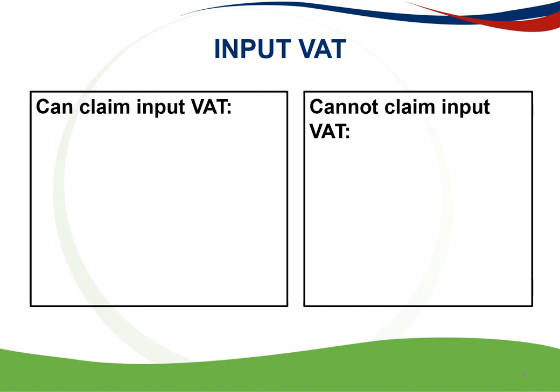The basics of input VAT. Input tax is the VAT component of the payment for goods and services supplied to the vendor for the purpose of making taxable supplies. For example, a vendor who purchases stationery to be used in the making of taxable supplies can claim the VAT portion of the expense as input tax. This input tax can then be deducted from the output tax in order to calculate the total VAT payable or refundable. Tax invoices are the driving force behind the VAT system, so no input tax may be claimed unless a vendor is in possession of a valid tax invoice.